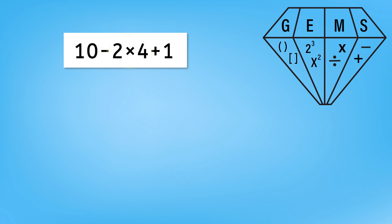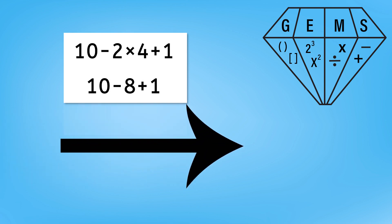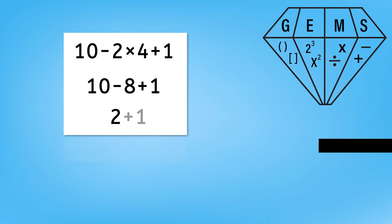According to GEMS, we start this problem with multiplication. 2 times 4 equals 8. Bring down the unsolved parts of the equation and now we are left with subtraction and addition. Both are ranked evenly so we work from left to right. 10 minus 8 equals 2 and 2 plus 1 equals 3.